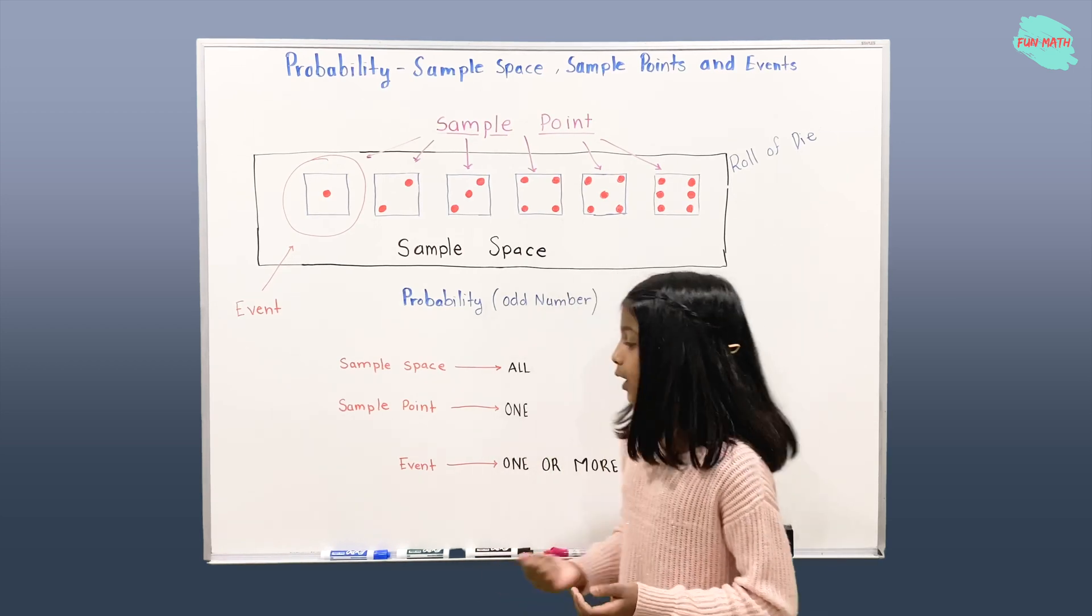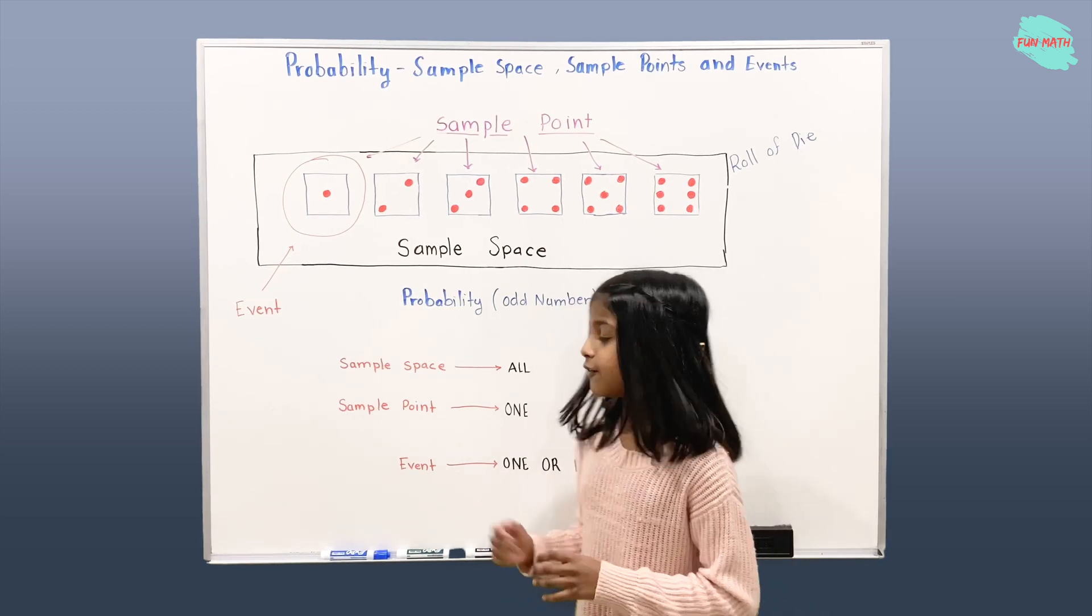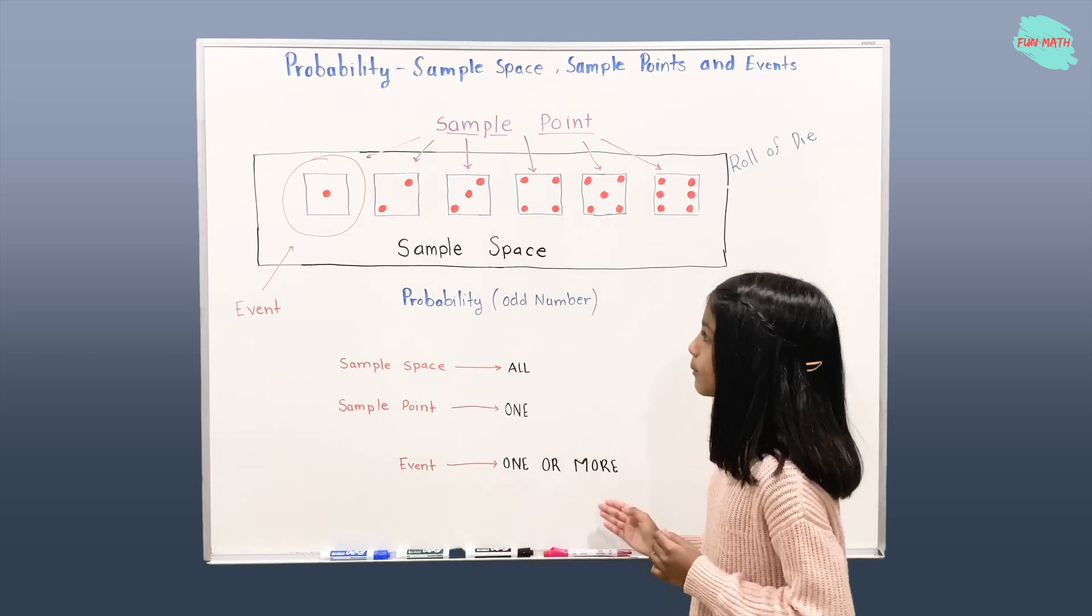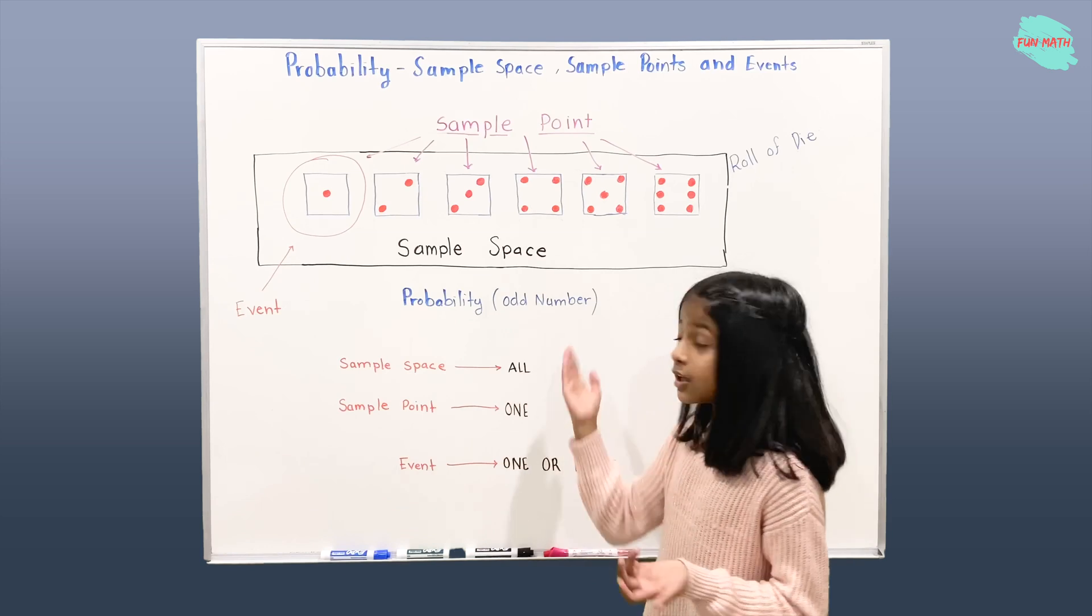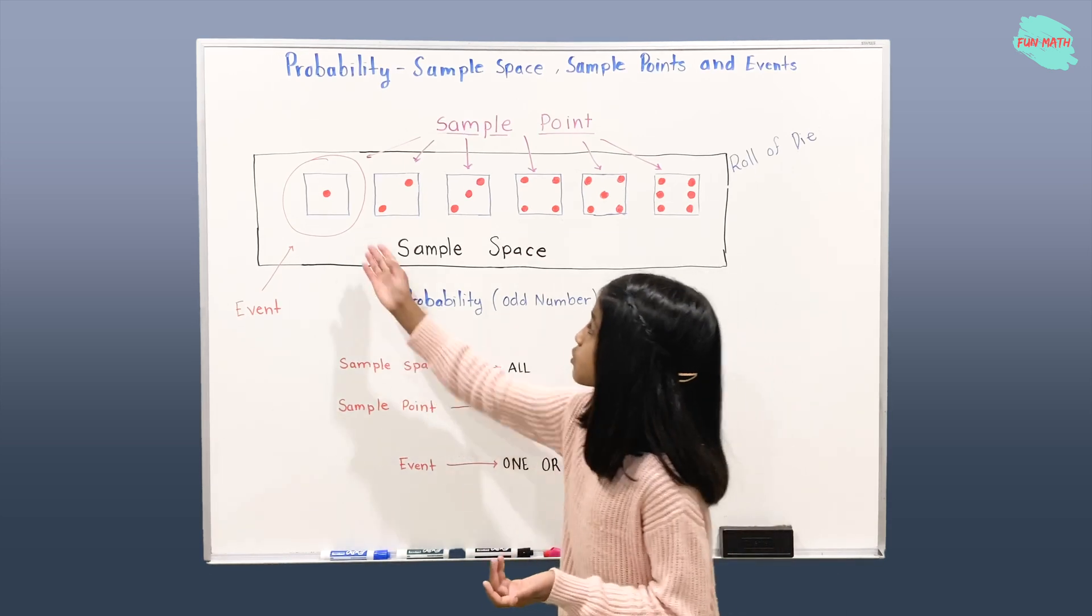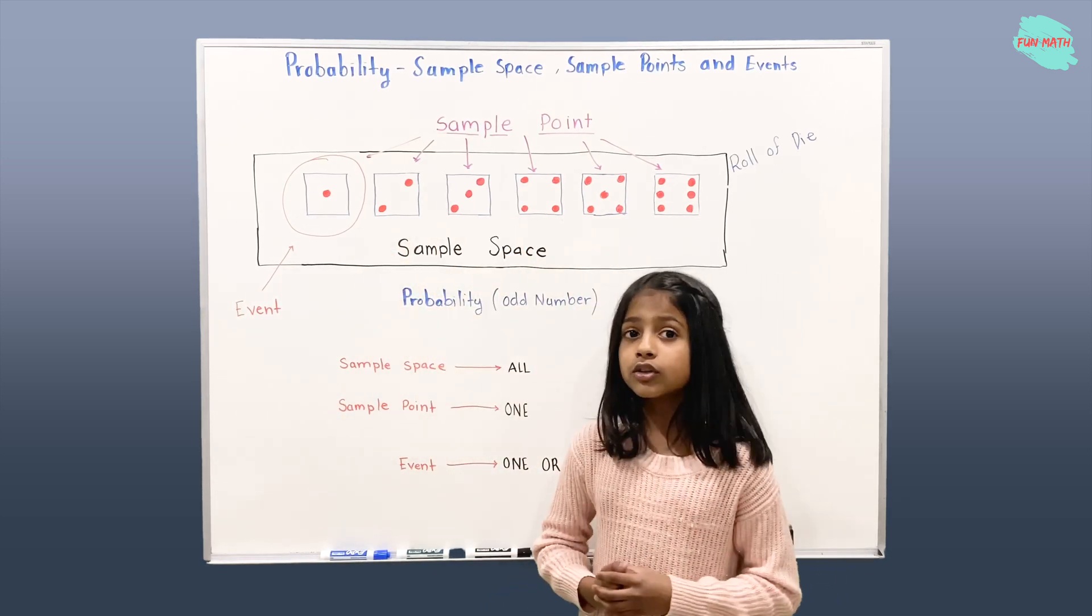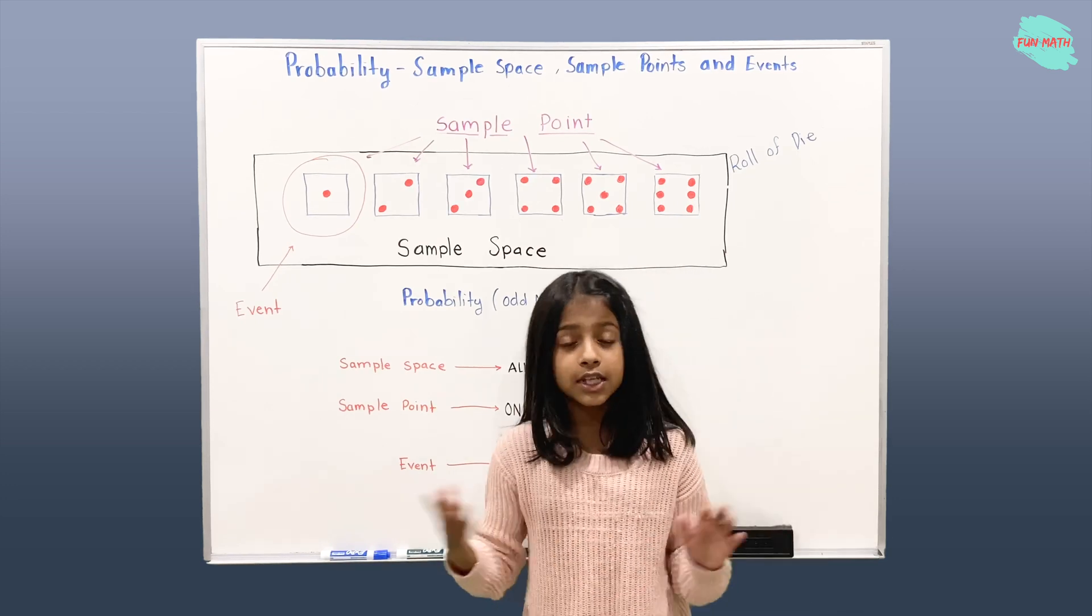Last thing. What is the event? Event is nothing but just one or more outcomes. Like probability of getting an odd number, for example. We found the odd numbers were 1, 3, and 5. So those are all the events.